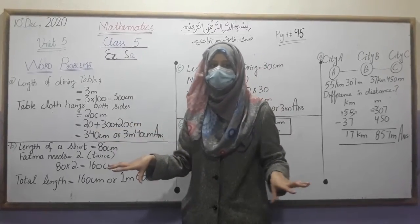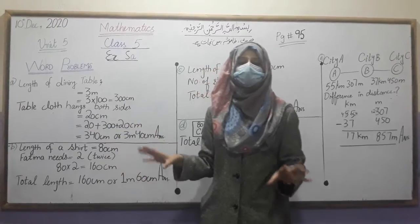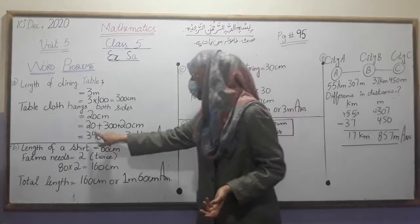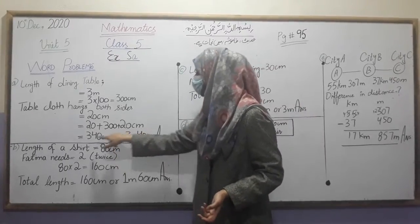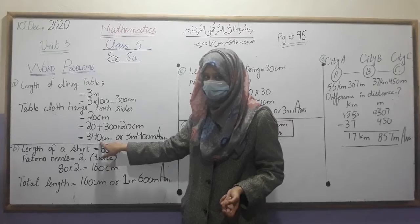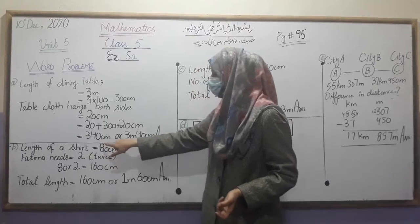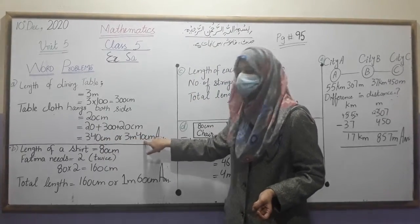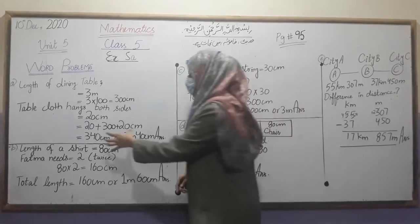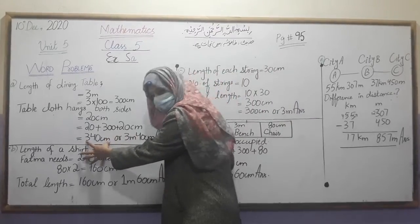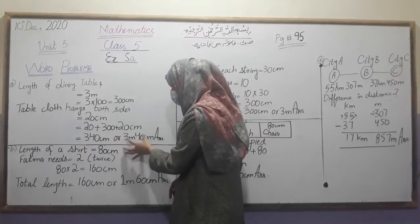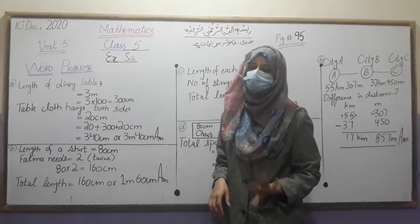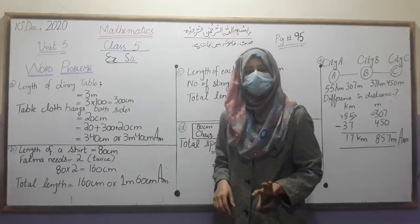We are going to find the total size of the center. We add them together: 3 meters plus 40 cm. If you have 40 cm, then you add it to 3 meters and you get your final answer.